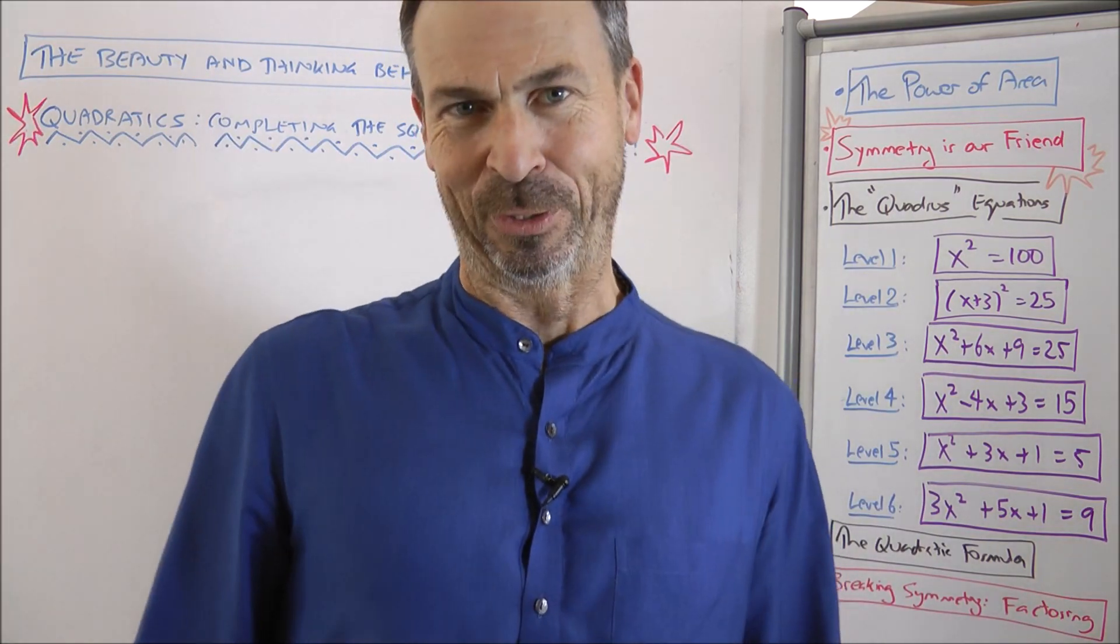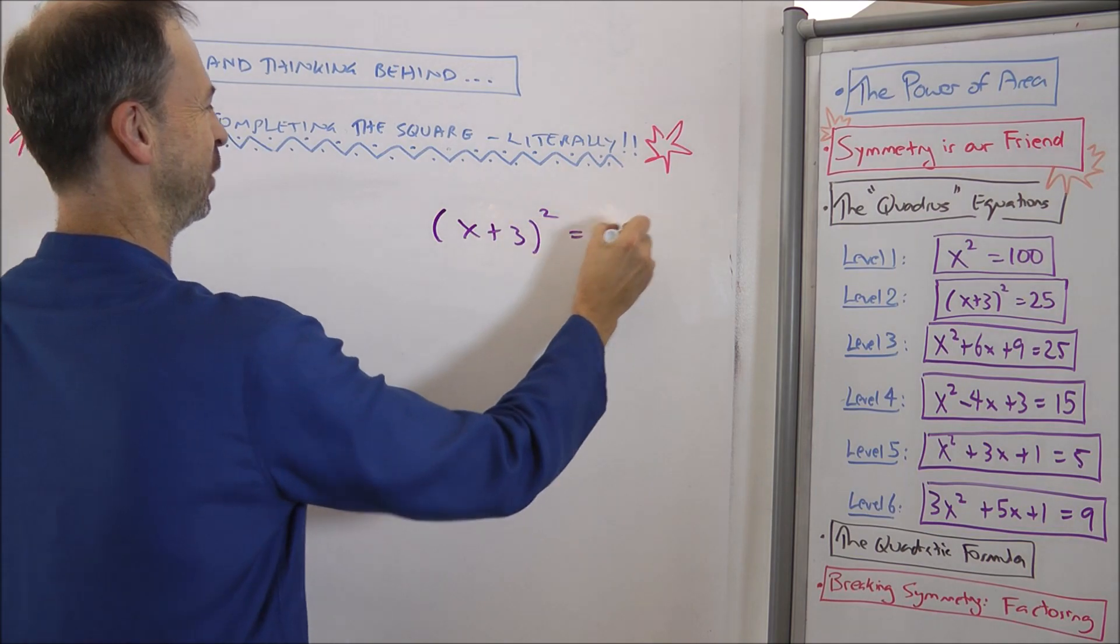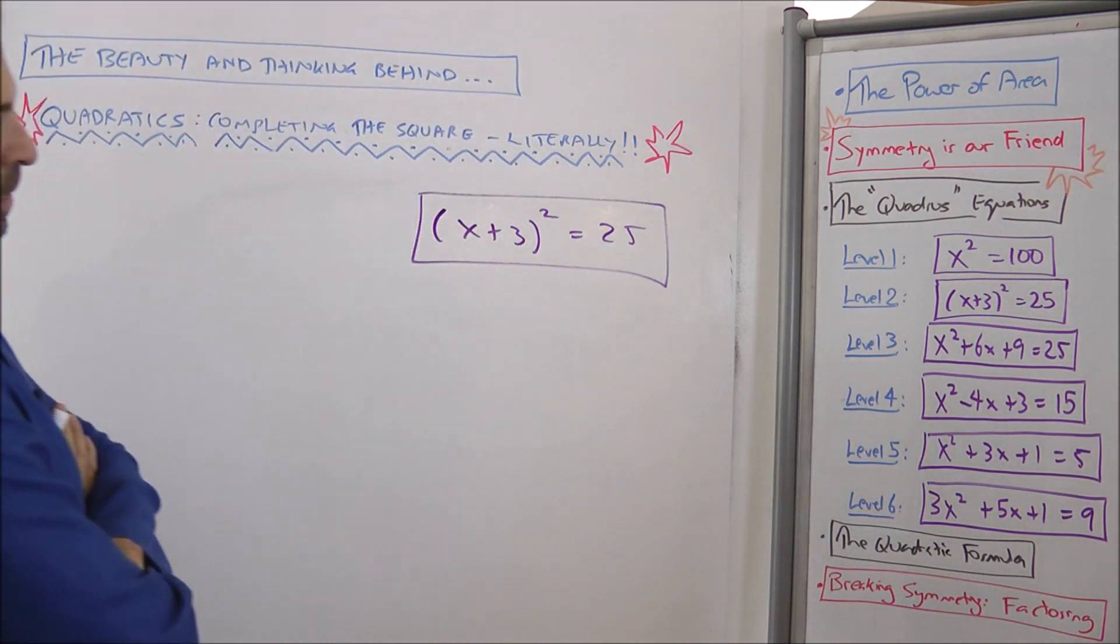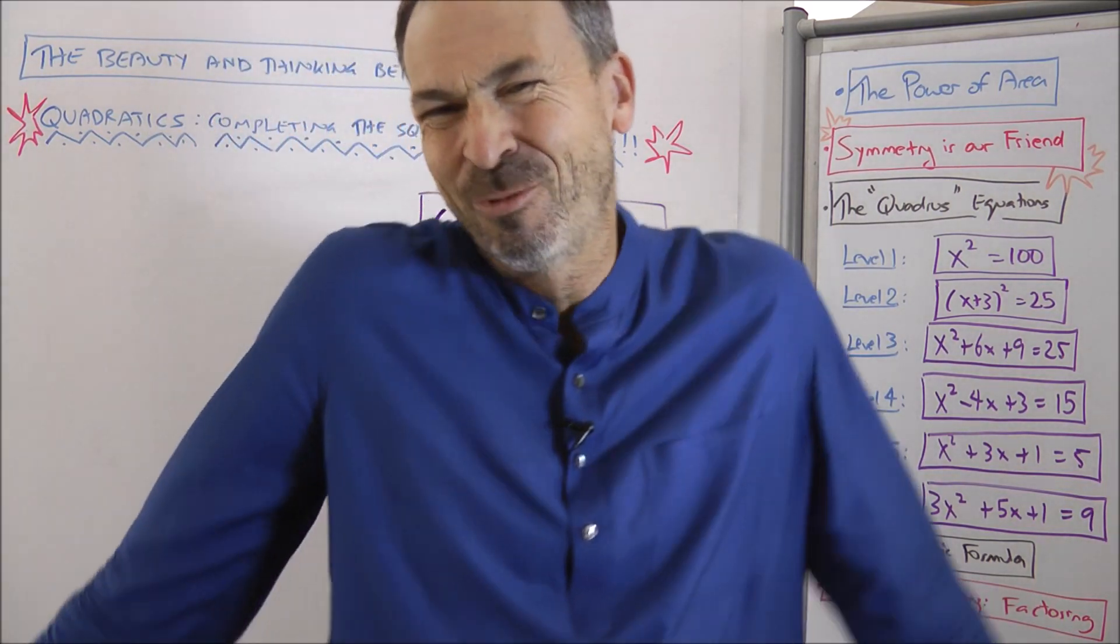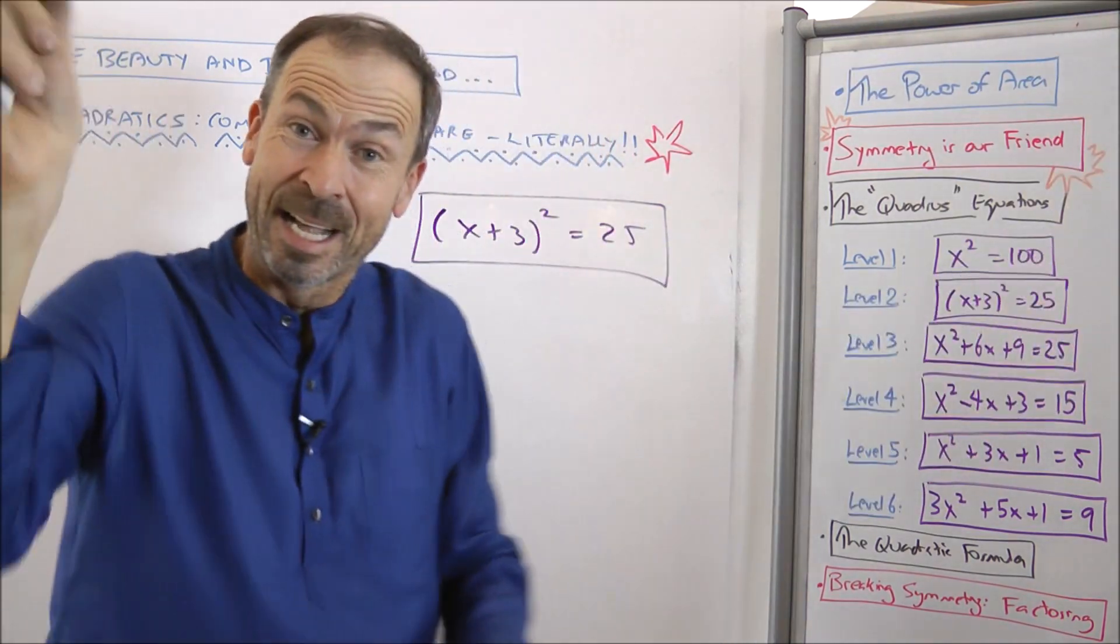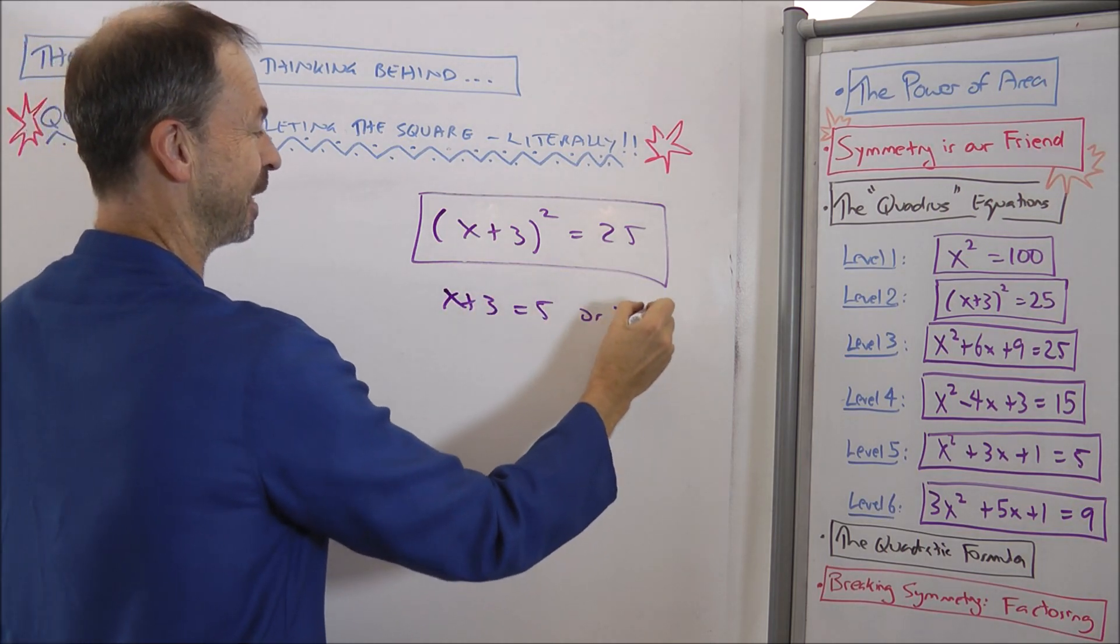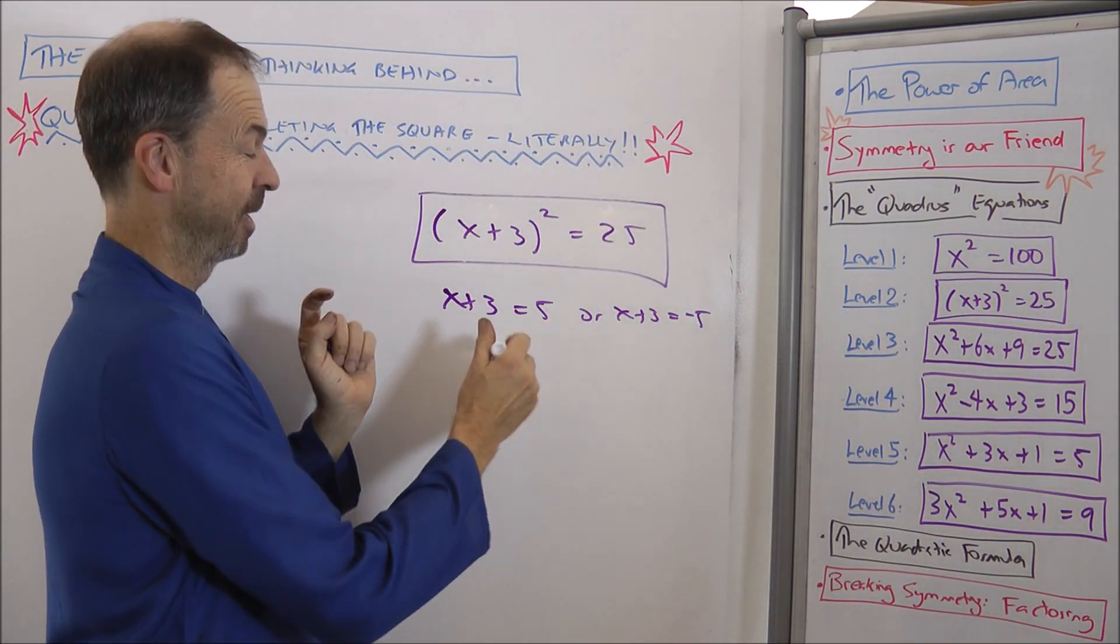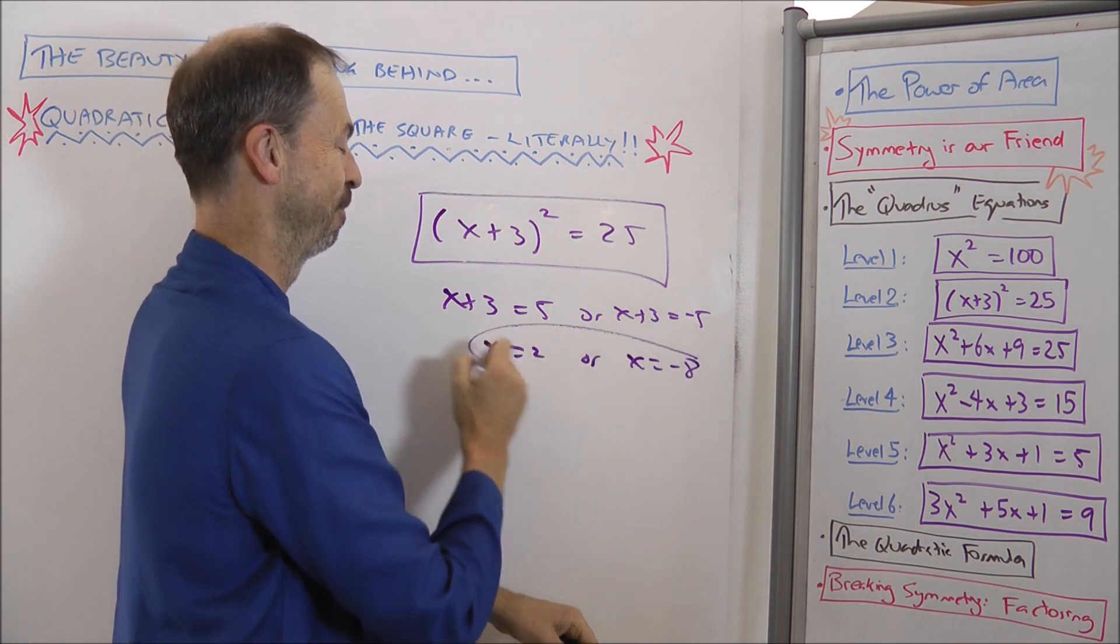Up a notch in difficulty to level two. Let's do this level two problem: (x + 3) squared is 25. The thing is just step back. Don't be so locked into it. Think of what it's really saying. Something squared is 25, which is really kind of level one. Something squared is 25. So that something better be five or its negative counterpart, negative five. So my something, my x plus three, is either five or my something is negative five. In which case we're golden. If I want x all by itself, let me just subtract three and I'll get that x is two or I get that x is negative five, take away three, x is negative eight. Beautiful.